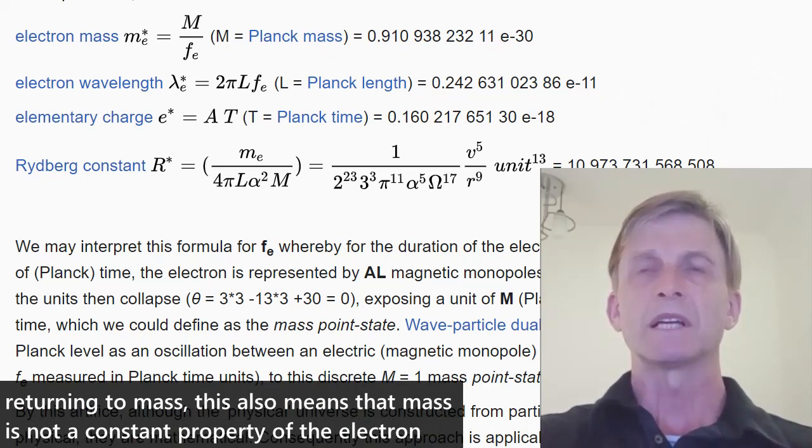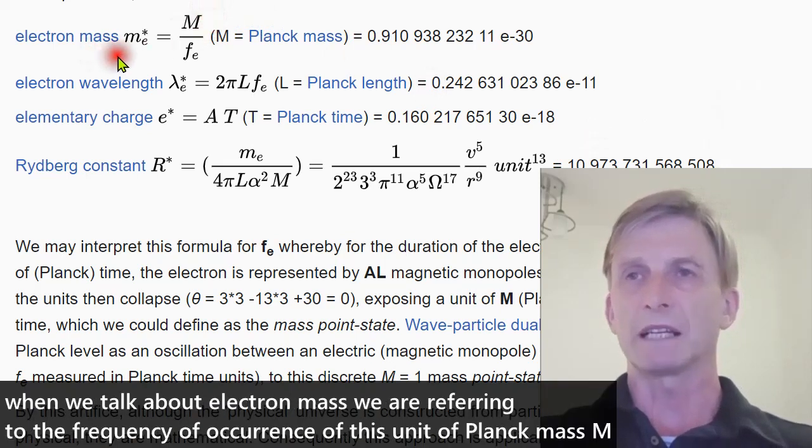Returning to mass. This also means that mass is not a constant property of the electron. When we talk about electron mass, we are referring to the frequency of occurrence of this unit of Planck mass.